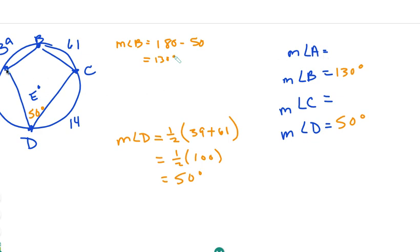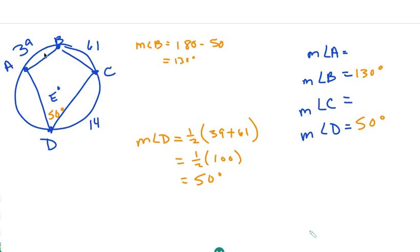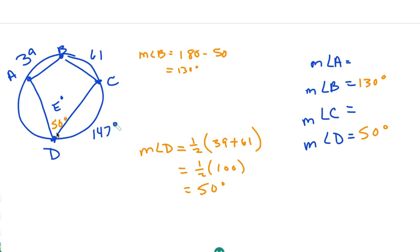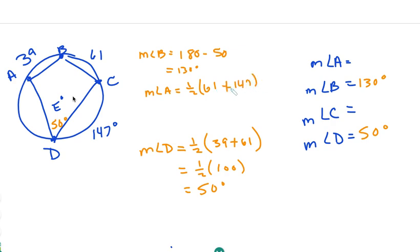Now we need to find the measure of angle A. We're going to look at the arcs that it intercepts — this should be 147. Angle A intercepts arc BC and arc DC. So the measure of angle A is going to be one-half of 61 plus 147. That's the full intercepted arc for angle A. So that gives me half of 208, which is 104 degrees.